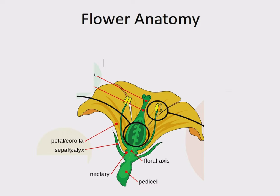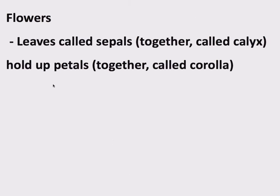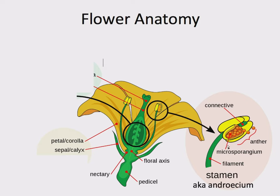There are leaves at the base of the flower called sepals; collectively they're called the calyx. This is going to seem like a lot of terminology, but I am omitting much of what's possible. Sepals are leaves; all of these sepals together are called the calyx. They hold up the petals of the flower. Collectively the petals are referred to as the corolla. So leaves called sepals together called the calyx hold up petals together called the corolla — that's just the support structure.